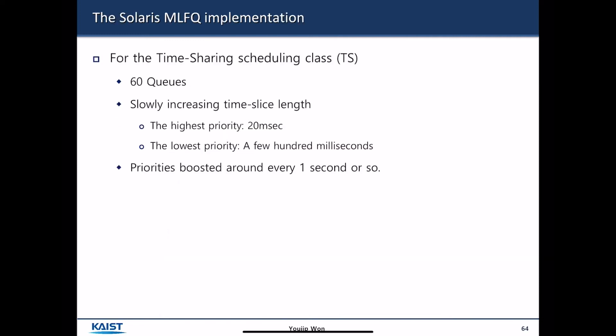Let's examine the details of multi-level feedback implementation in Solaris. It uses a timesharing scheduling class and it has 60 queues. It is slowly increasing the time length based on the priority of the queue. The highest priority queue has 20 milliseconds time length, whereas the lowest priority queue has a few hundred milliseconds time slice length.